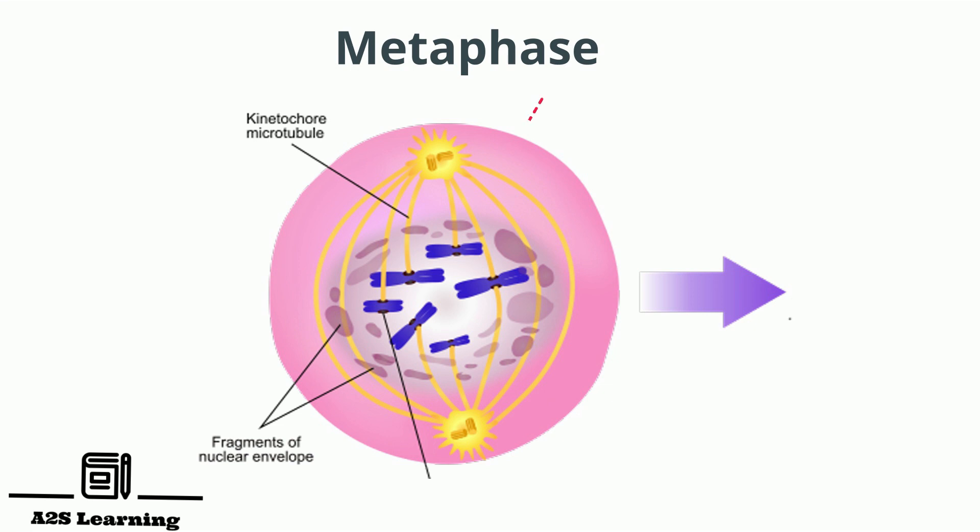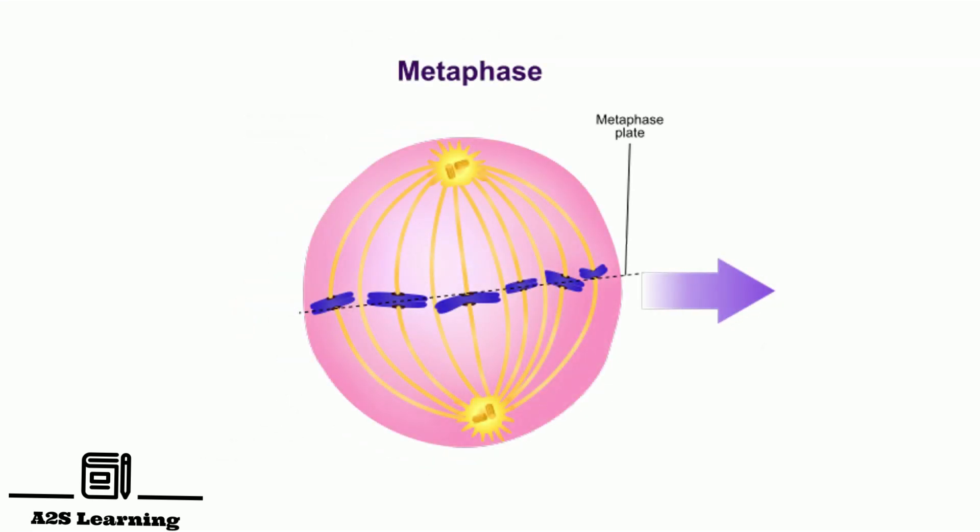During this stage, spindle fibers attach to the kinetochore of chromosomes. The spindle fibers align the centromere of the chromatid pair at the exact center of the mitotic spindle. The plane of alignment of chromosomes at metaphase is referred to as the metaphase plate.